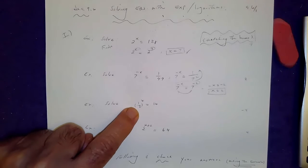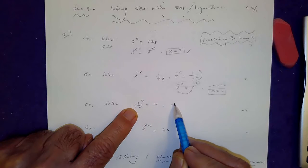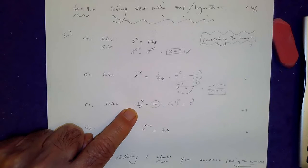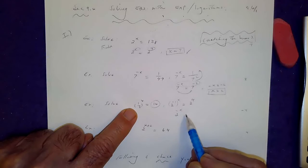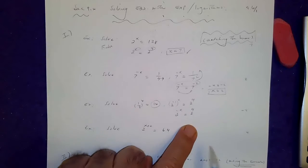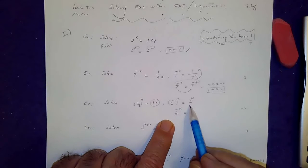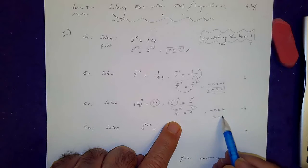What about (1/2) to the power of x? I can write that as 2 to the power of negative 1, all to the power of x, and I can write 16 as 2 to the 4. Then multiply negative 1 by x to get 2 to the negative x equals 2 to the 4. I managed to match the bases, set the powers equal: negative x equals 4, so x is equal to negative 4.